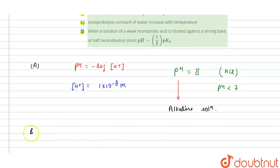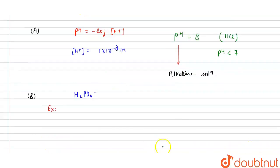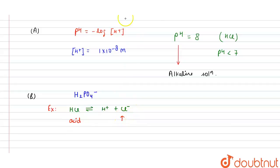Now we check option B: the conjugate base of H₂PO₄⁻. To understand conjugate base, let's take the example of HCl. In an equilibrium reaction, HCl gives H⁺ plus Cl⁻. HCl is the acid, and if we remove one H⁺ from HCl, what remains is called the conjugate base.